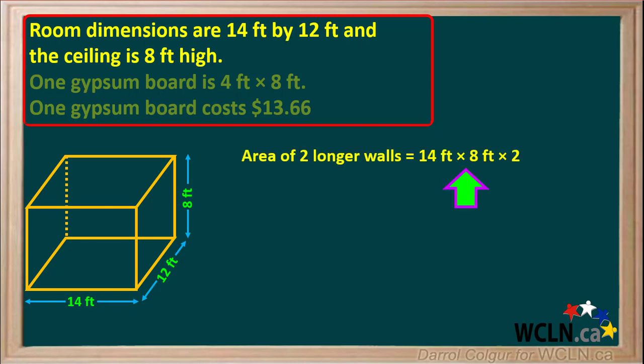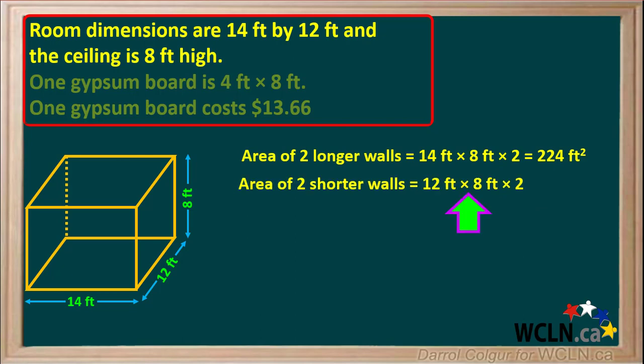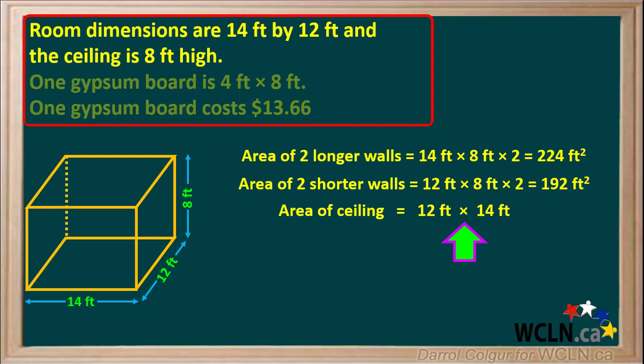Now we'll calculate the areas of the walls and ceiling we need to cover. The total area of the two longer walls is 14 feet × 8 feet × 2, which is 224 square feet. The total area of the shorter walls is 12 feet × 8 feet × 2, which comes out to 192 square feet. And the area of the ceiling is 12 feet × 14 feet, which comes out to 168 square feet.